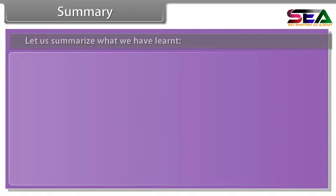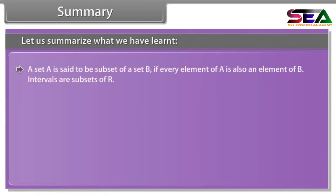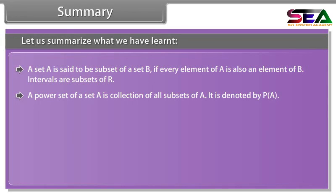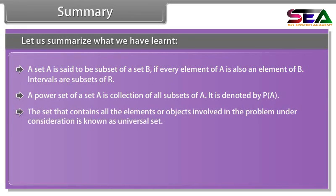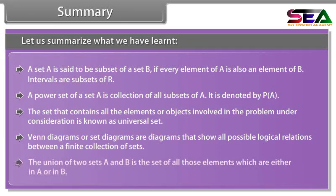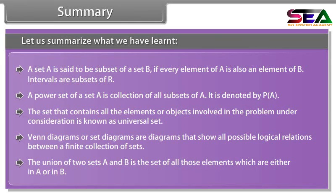Summary. Let us summarize what we have learned. A set A is said to be subset of a set B if every element of A is also an element of B. Intervals are subsets of R. A power set of a set A is collection of all subsets of A, denoted by P(A). The set that contains all the elements or objects involved in the problem under consideration is known as universal set. Venn diagrams or set diagrams are diagrams that show all possible logical relations between a finite collection of sets. The union of two sets A and B is the set of all those elements which are either in A or in B.